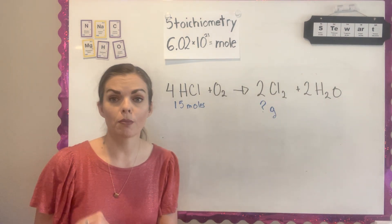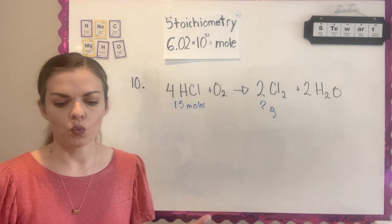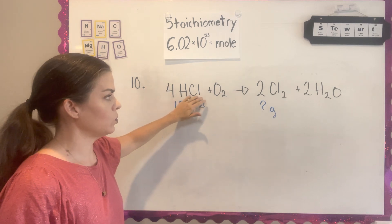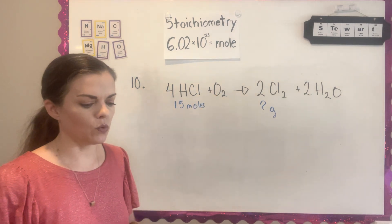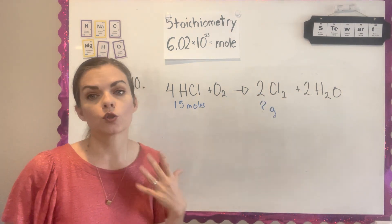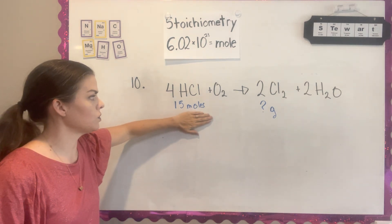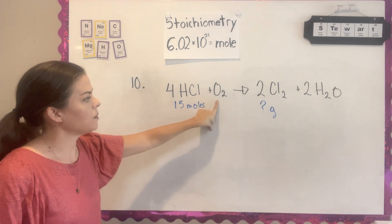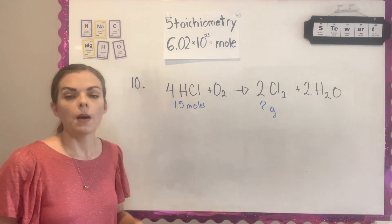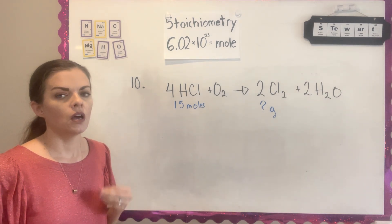Question 10 combines molar mass (grams and moles) with mole-to-mole conversion in one problem. It gives us an equation for hydrogen monochloride and oxygen — burning HCl in excess oxygen to make chlorine gas and water. They tell me I'm starting with 15 moles of HCl burned in excess oxygen and producing Cl2, but they want to know how many grams of Cl2 are produced, not moles.